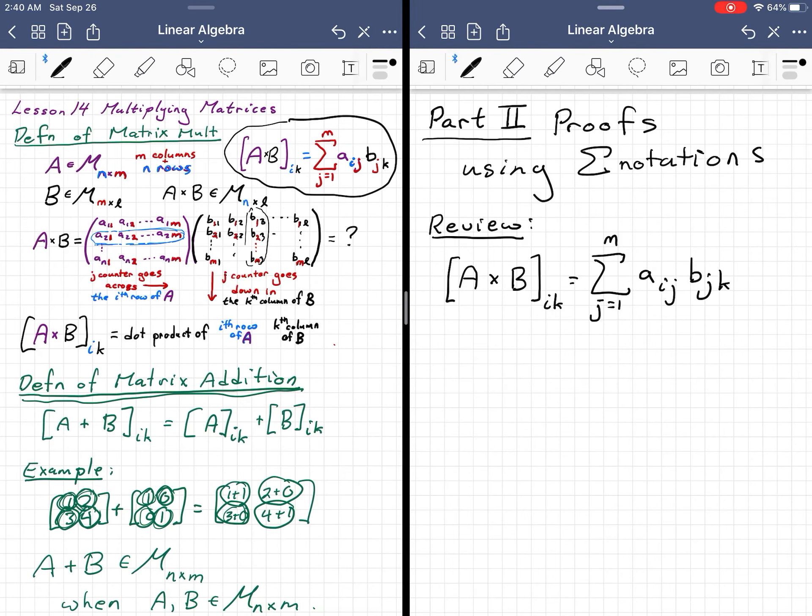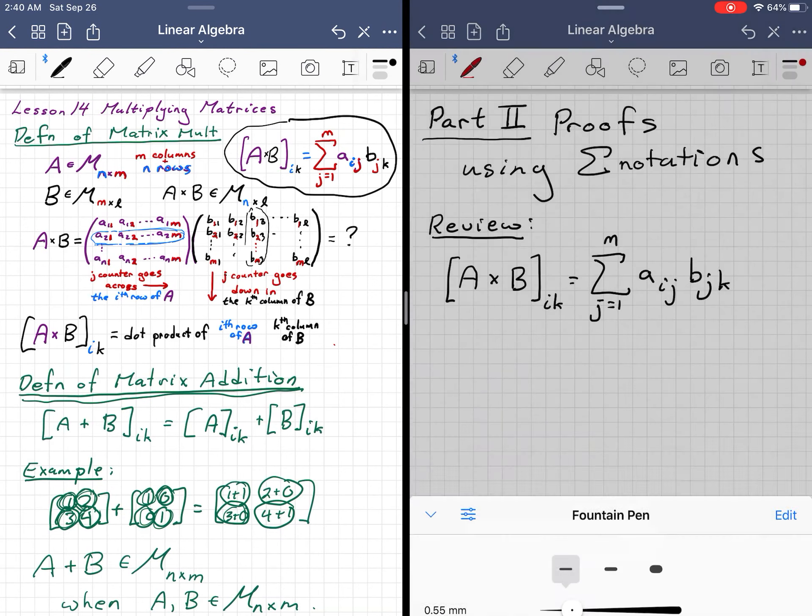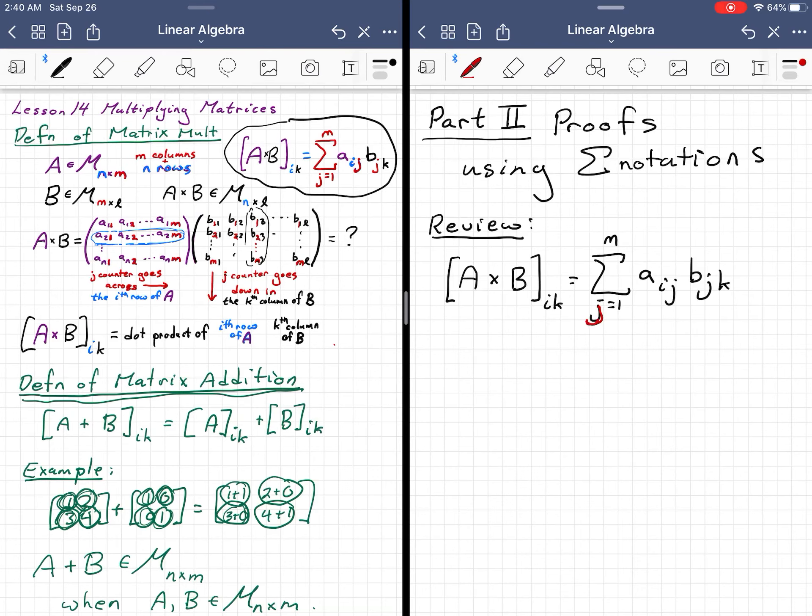So again, the counter I'm going to do in red, just to really emphasize it, the counter j equals 1 to m, a i,j, b j,k...